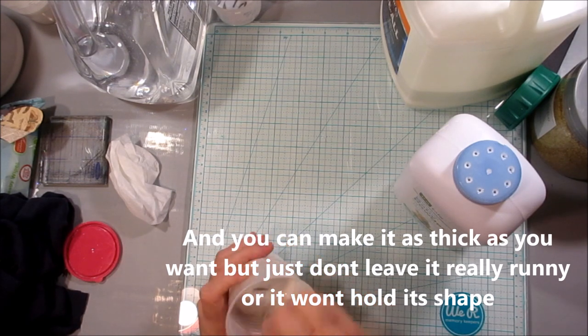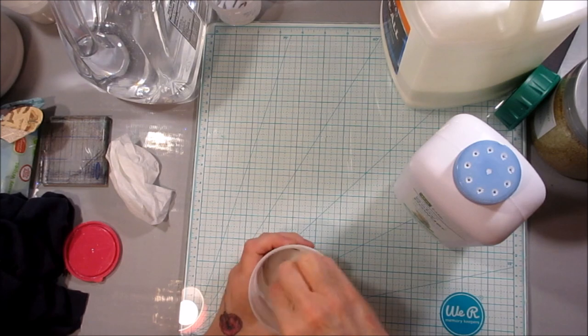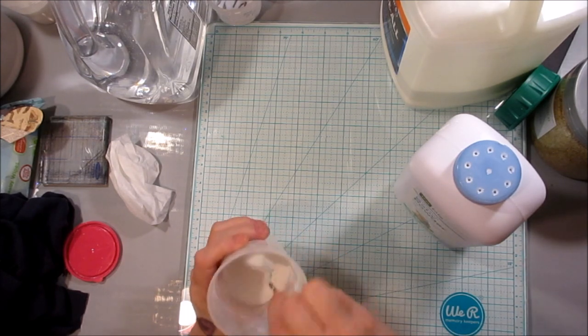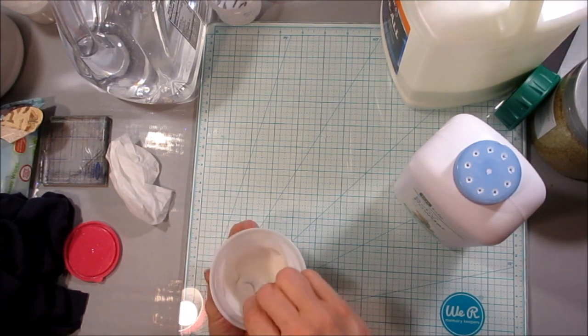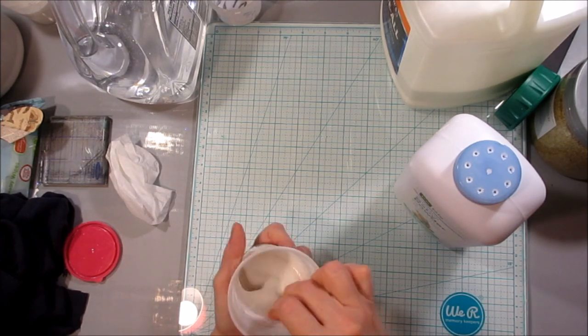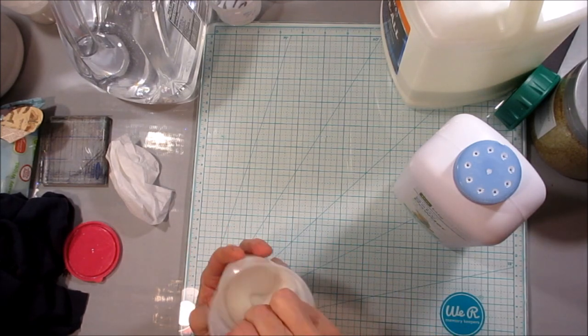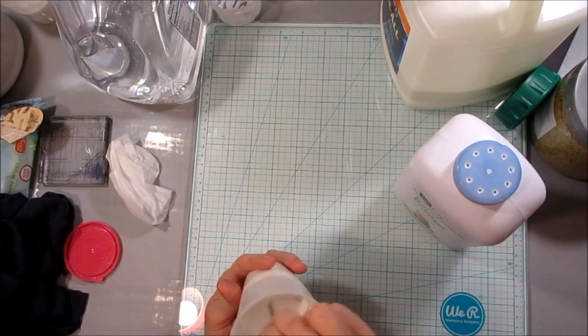This is why there's no real recipe for this part. You just add it in until it gets pasty. I mean, that's really pretty much it. A little glue, a little water, and a little baby powder. And you just mix it up real well before you add any more, because it's easier to add more than it is to take out. But then again, if you do add too much, add a little more glue and a little more water. And just play with the recipe. It doesn't have to be exact.